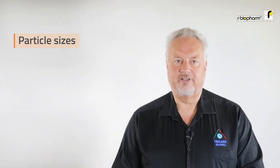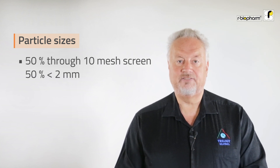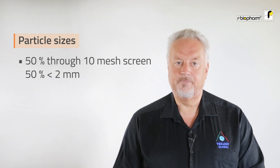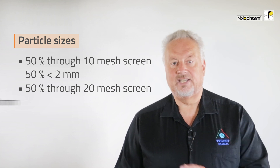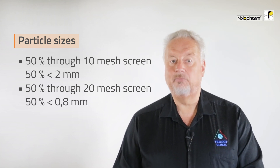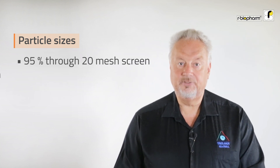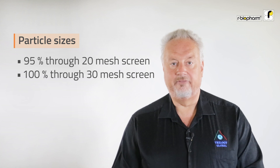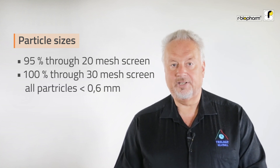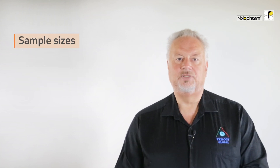The first, least fine fraction: 50% passes through a 10 mesh screen, meaning 50% of the particles are smaller than 0.8 millimeters. The second fraction: 50% passes through a 20 mesh screen, meaning 50% of the particles are smaller than 0.8 millimeters. The third fraction: 95% passes through the 20 mesh screen. The fourth and final fraction: 100% passes through a 30 mesh screen, meaning all particles are smaller than 0.6 millimeters.